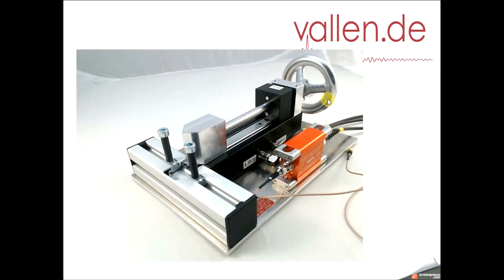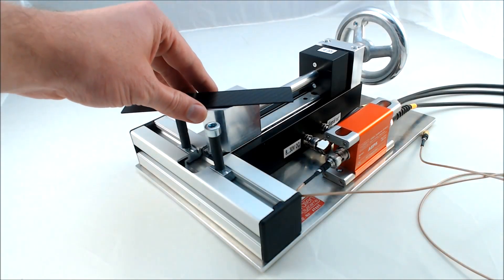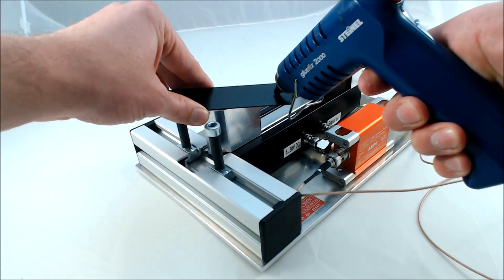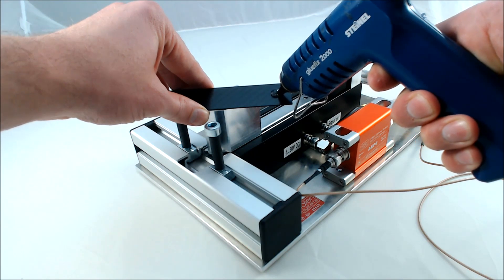The demo device consists of a screw mechanism to load the CFRP sample. Load is measured by a pressure cell and recorded. The CFRP sample is mounted between the screw and counterbearing. The sensor is glued with hot glue to the CFRP sample.